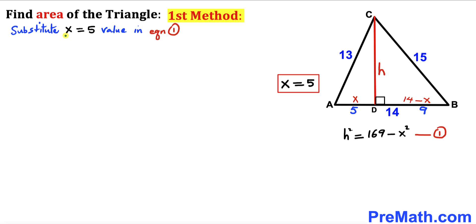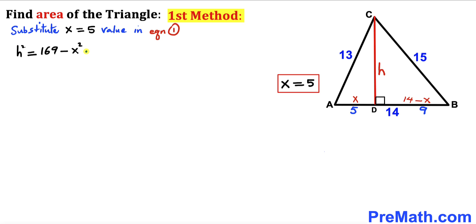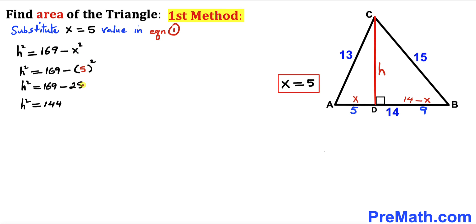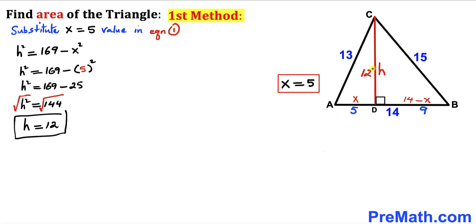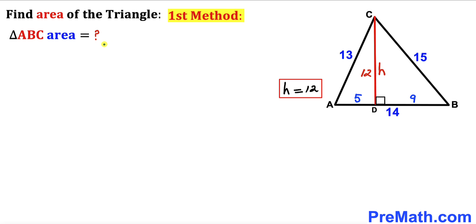Now we substitute x = 5 into equation one to solve for height h. Plugging in gives h² = 169 − 25 = 144. Taking the square root of both sides, our height h turns out to be 12 units.